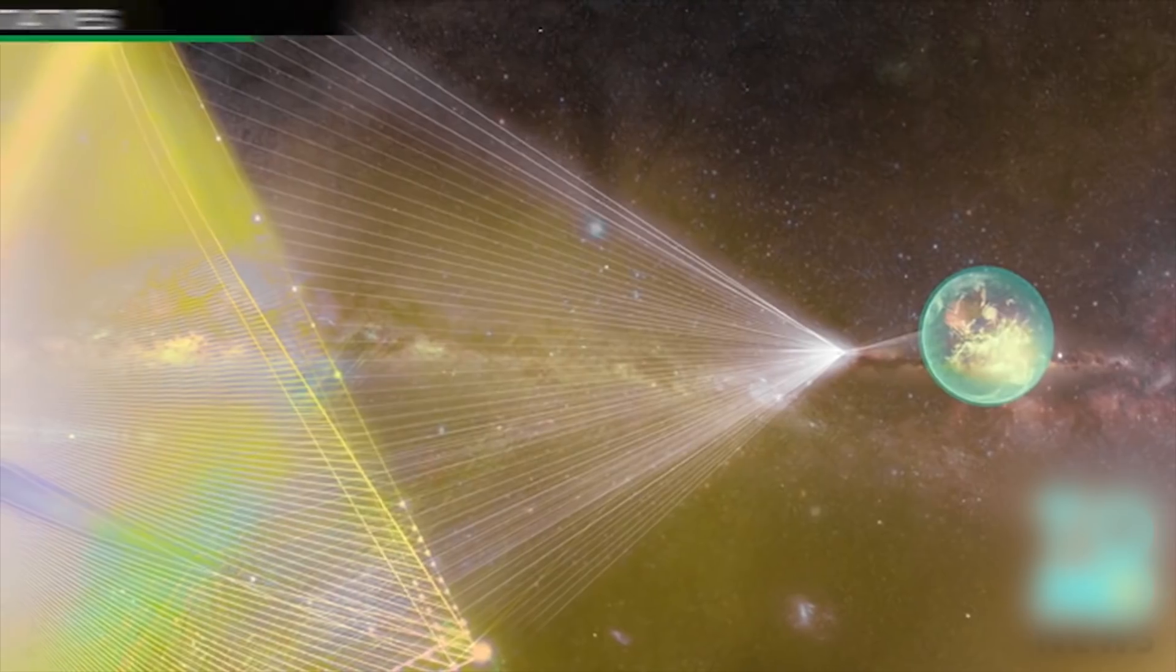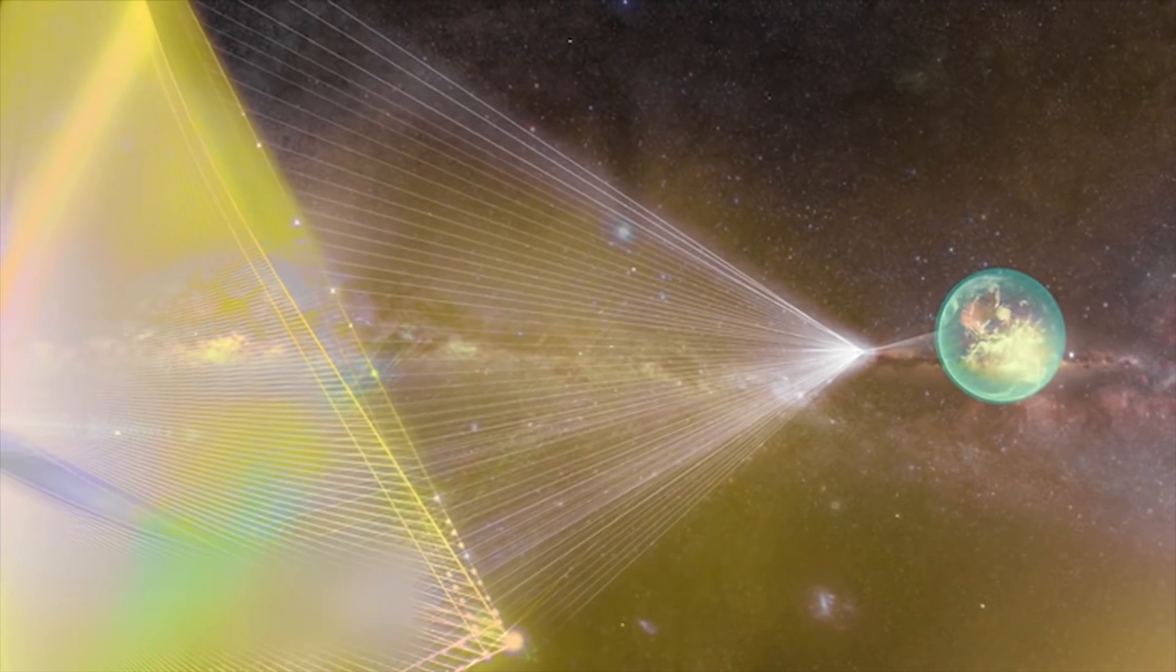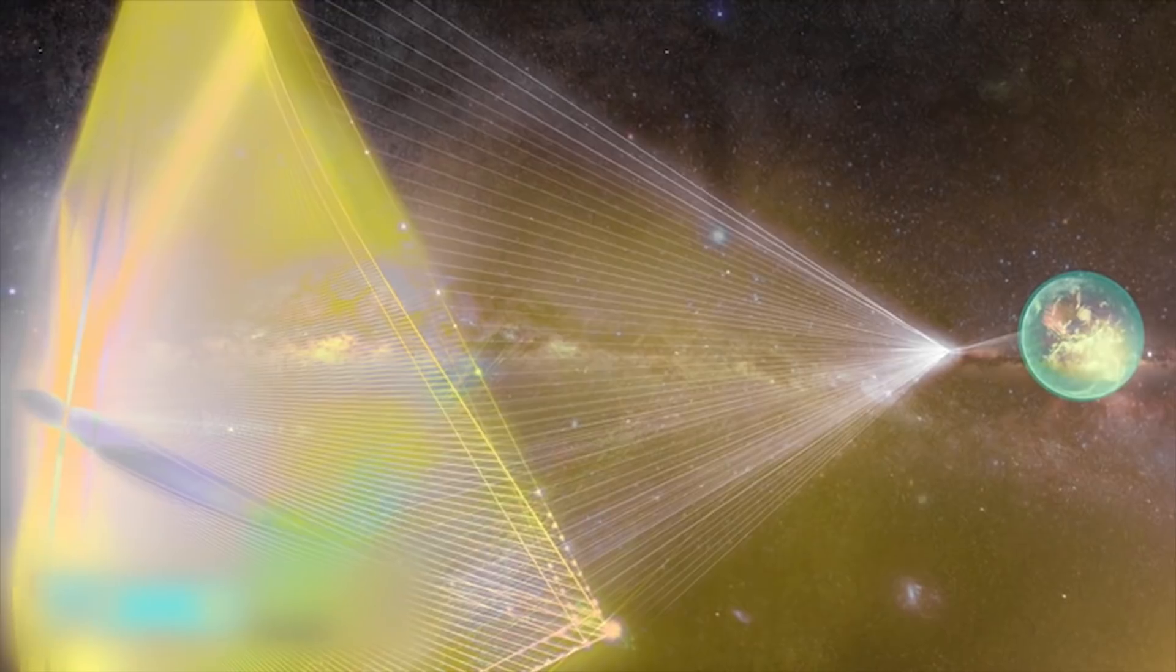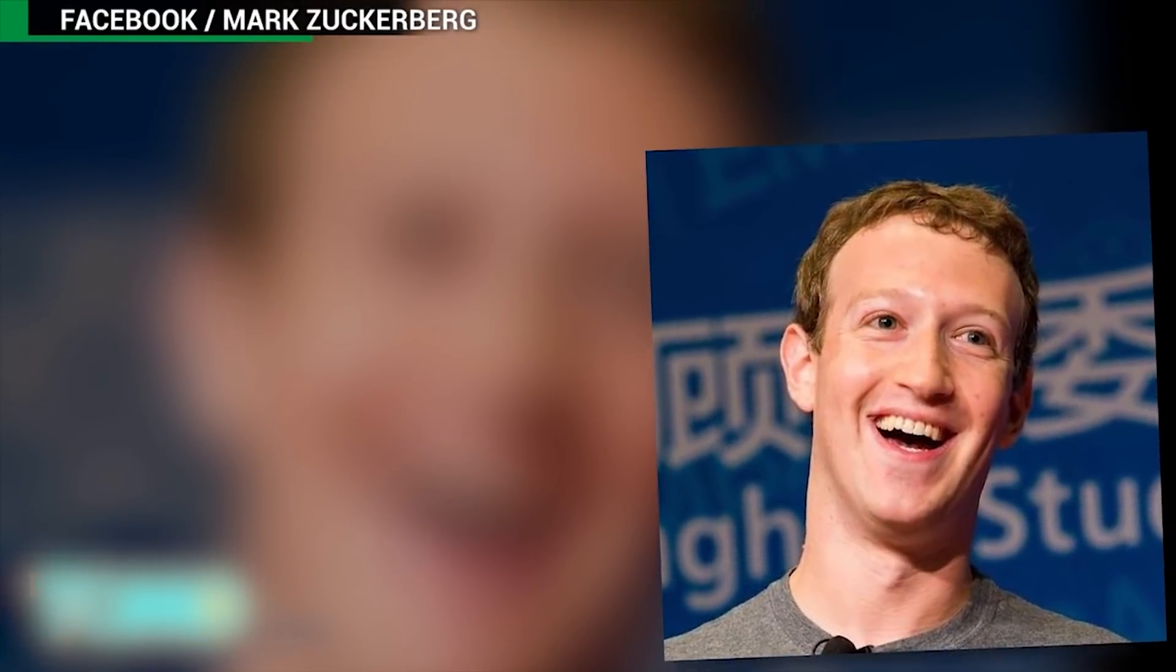Scientists hope to launch interstellar fleet of laser-propelled spacecraft. A team of renowned scientists, Silicon Valley elites, and a billionaire businessman have come together to launch a fleet of postage-stamp-sized interstellar spacecraft. Sounds like the pitch for a bad Bond movie, right? Well, if it was, 007 would have his hands full. Because this team includes scientist supreme Dr. Stephen Hawking, Russian billionaire Yuri Milner, and Facebook founder Mark Zuckerberg.